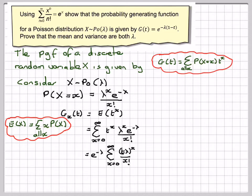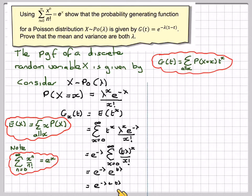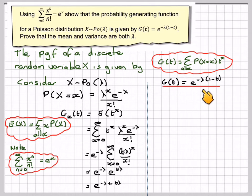Now we use the exponential series identity, so the sum becomes e to the tλ. This gives us e to the minus λ times e to the tλ, which equals e to the minus λ plus tλ. Therefore the probability generating function g(t) equals e to the λ(t minus 1), which is what we had to prove.